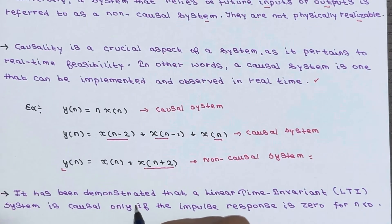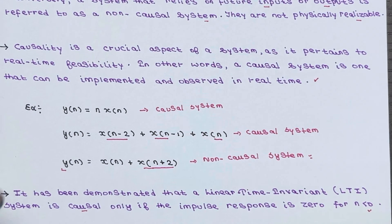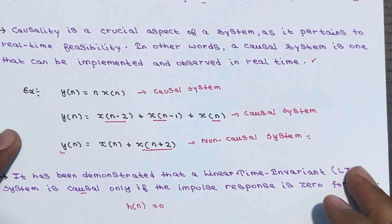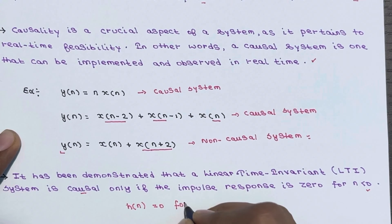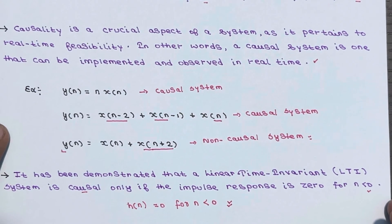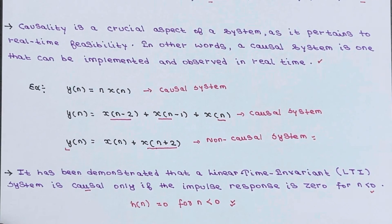It has been demonstrated that a linear time-invariant (LTI) system is causal only if the impulse response is zero for n less than 0. In other words, an LTI system is causal if and only if h of n, which is the impulse response, equals zero for n smaller than 0.